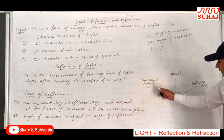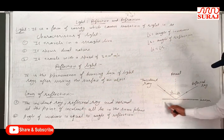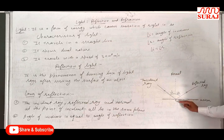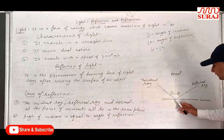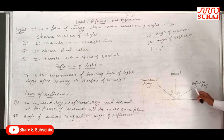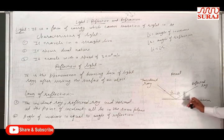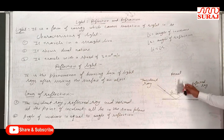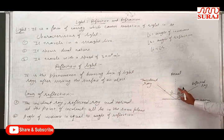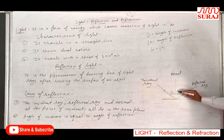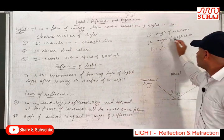Here we can see that this is the incident ray, this is the mirror and object, and this is the incident ray coming from the point of incidence. The angle between the normal ray and the reflected ray is known as the angle of reflection, that is angle R.